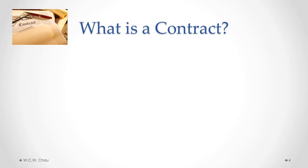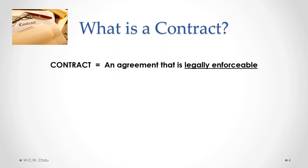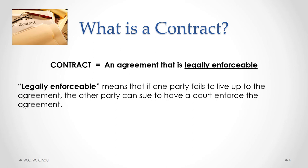What is a contract in law? A contract is defined as an agreement that is legally enforceable. There are two components to that definition: the first is an agreement, and the second is that the agreement is legally enforceable. What do we mean by legally enforceable? It means that if one party fails to live up to the agreement — in other words, they're in breach of the contract — the other party can sue to have a court enforce the agreement.